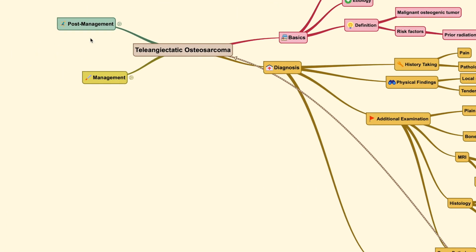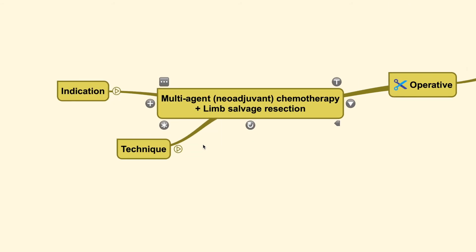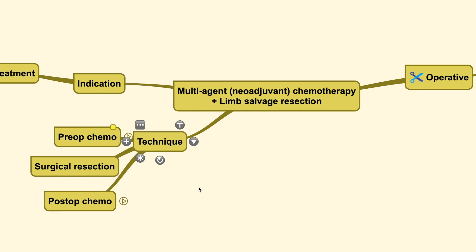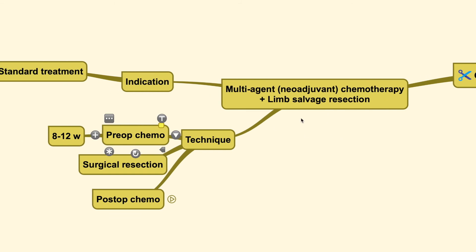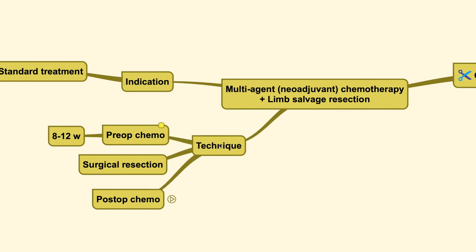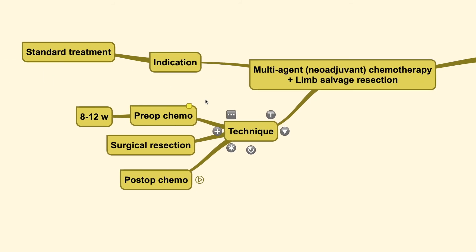Now that you know the basics of diagnosis, here comes the management. Tumors need to be operated on. The operation usually involves a multi-agent neoadjuvant chemotherapy regimen followed by limb salvage resection. Limb salvage is reserved for certain criteria: the lesion must be resectable leaving the remaining region clear of tumor cells with clearance similar to amputation, with no neurovascular involvement. For more information on the principles of limb salvage, check out my oncology basics video in the oncology playlist.